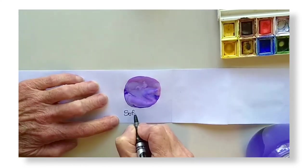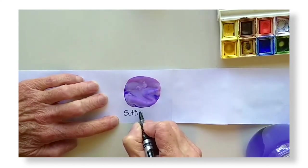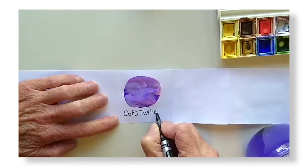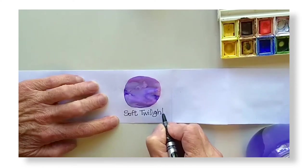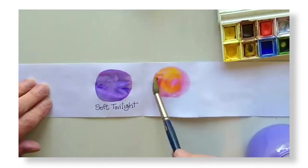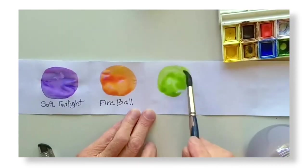This color reminds me of the sky right after sunset and it feels very gentle to me. So I think I'll name it Soft Twilight. Use your imagination to name your colors. There's no wrong answers and the sky is the limit.